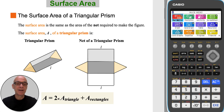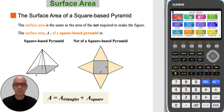The net of a triangular prism is shown in this diagram. The surface area of a triangular prism is equal to 2 times the area of the end triangles, plus the areas of the 3 rectangles. The net of a square-based pyramid is shown in this diagram. The surface area of a square-based pyramid is equal to the area of the 4 triangles, plus the area of the square base.